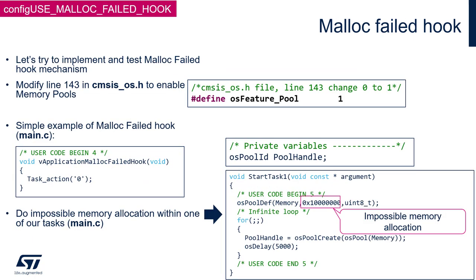Here is an example implementation and test of the malloc failed hook. Within the callback implemented in main.c there is only a taskYIELD call. Within the startTask1 function body, also in main.c, there is a trial of extra memory allocation via osPoolCreate, which should be taken from the available heap space. Because the requested size is much larger than the available heap area, the malloc failed hook is triggered as a result.